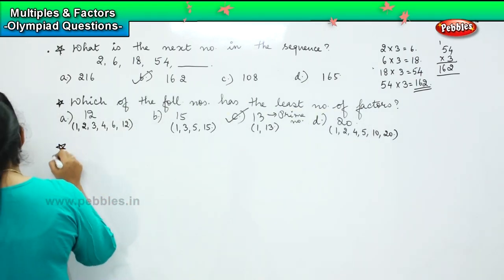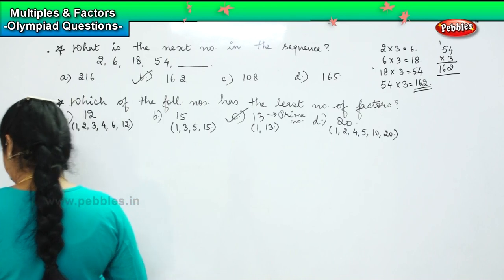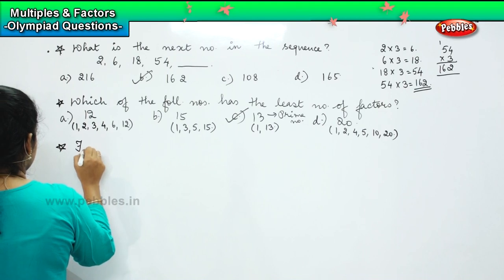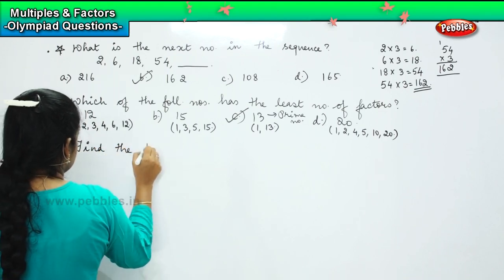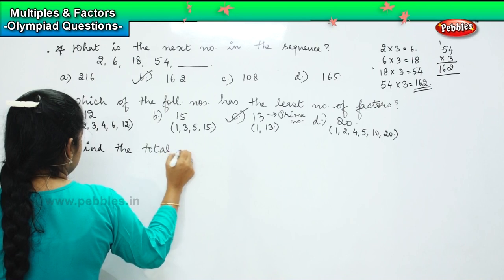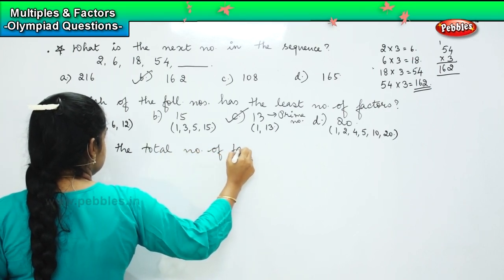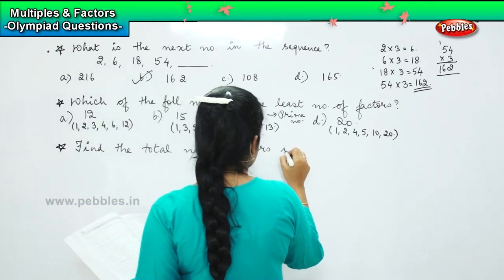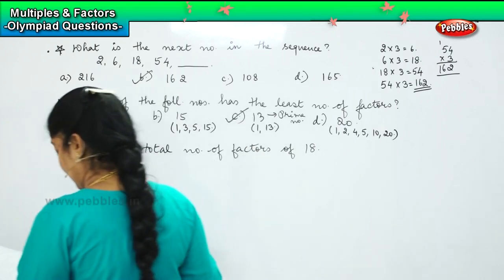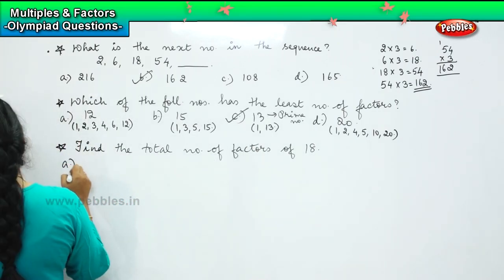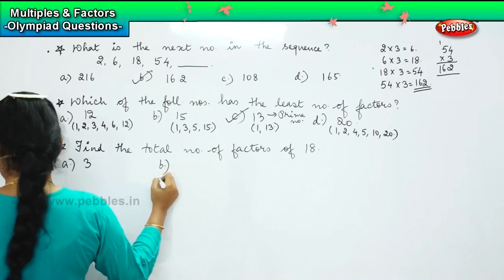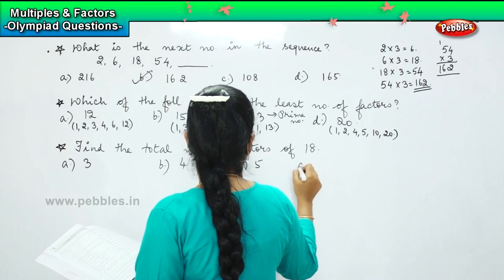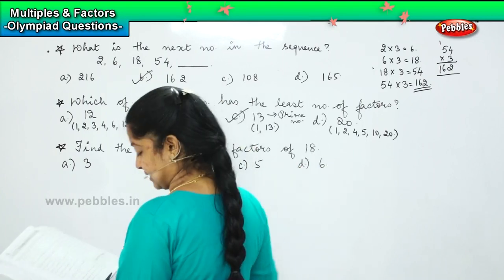The next question for you is: find the total number of factors of 18. Your options are 3, 4, 5, and 6.